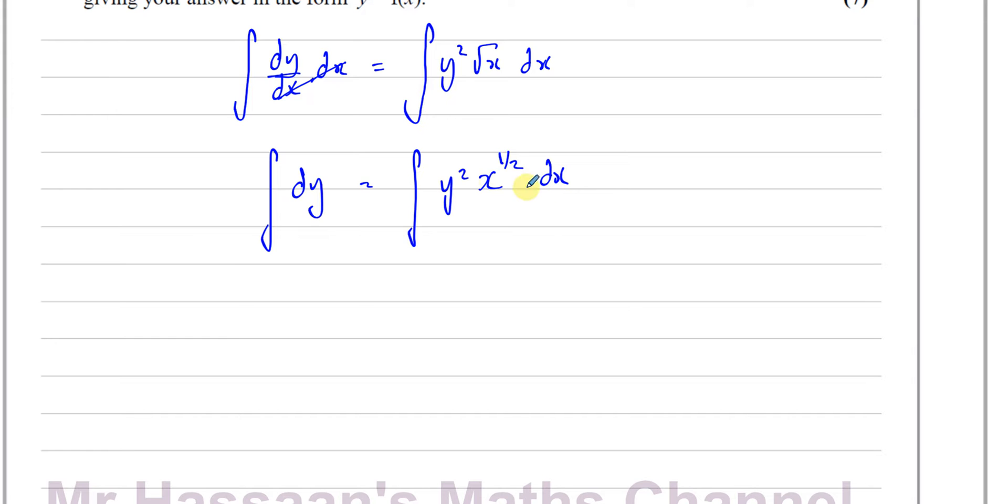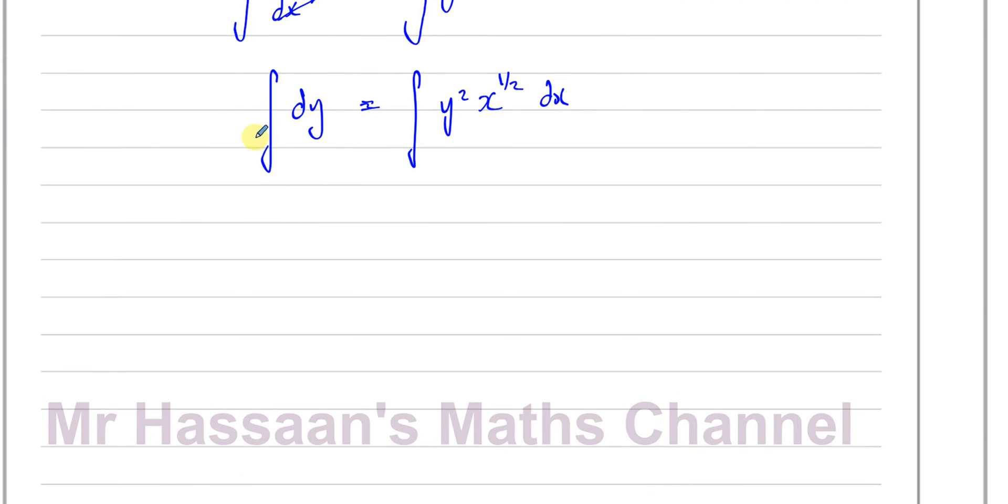Now, what we have to do is separate the variables. On the side where we have dy, all the y terms have to be there, and the side where we have dx, the x terms have to be on this side. So this y squared is in the wrong place. I'm going to divide both sides by y squared, in which case this will be 1 over y squared, which is the same as y to the power of minus 2. So this side is y to the power of minus 2 dy, and this side is x to the power of a half dx.